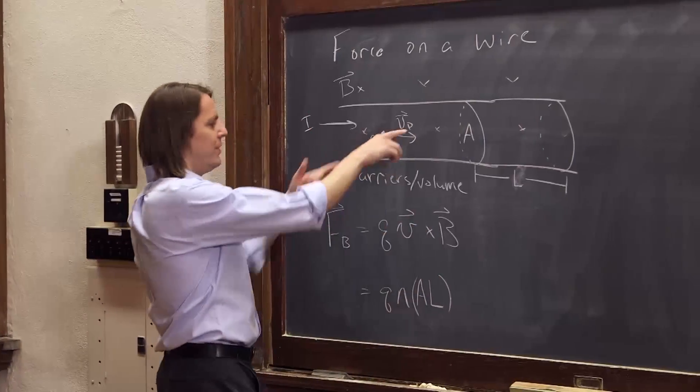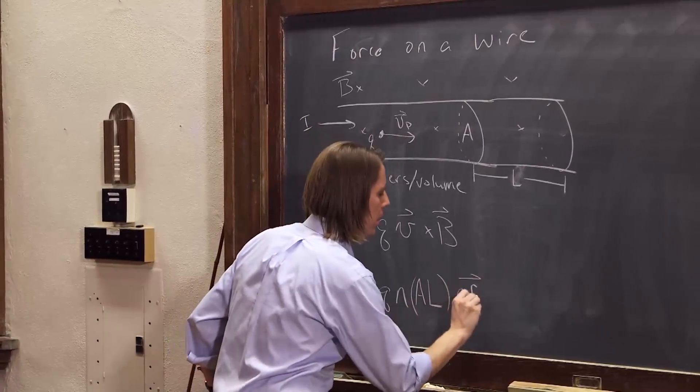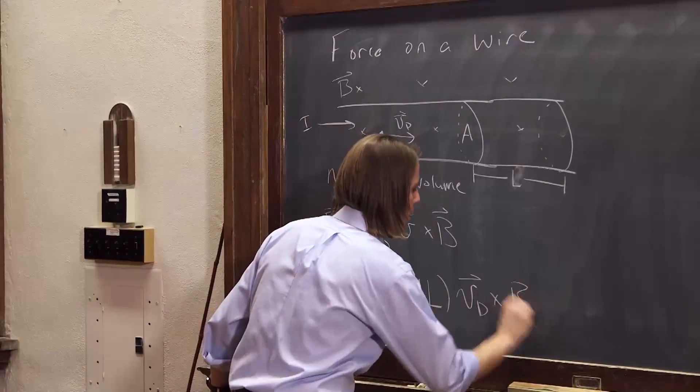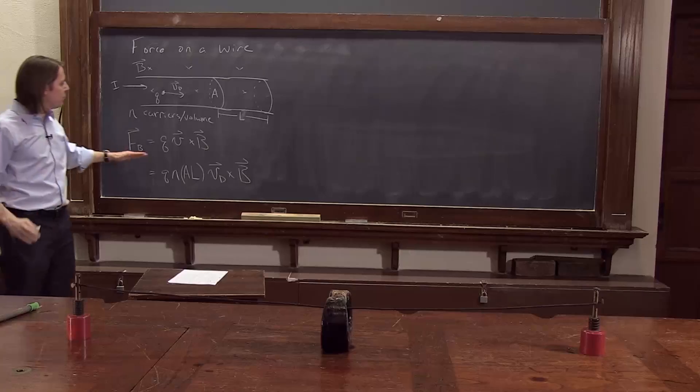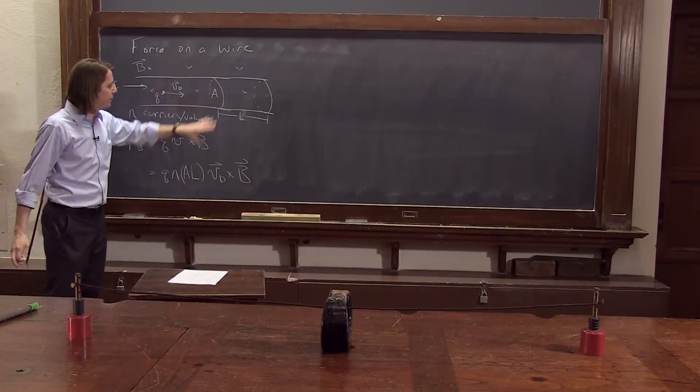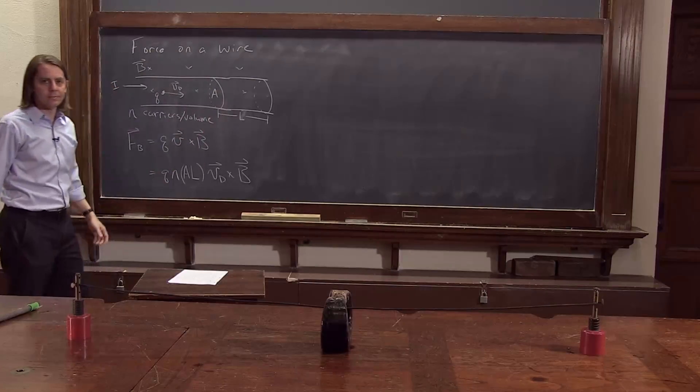The velocity, they're all moving at VD. And the magnetic field is the same, cross B. So that's how you would represent the force, the total force on the wire for a length L.